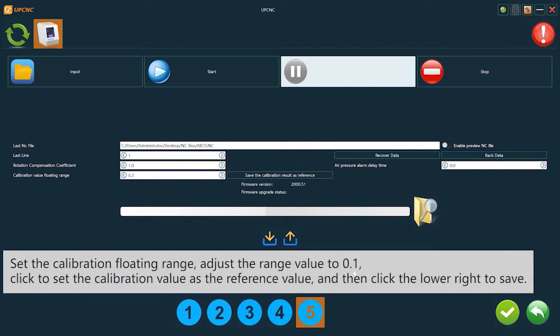Set the calibration floating range. Adjust the range value to 0.1. Click to set the calibration value as the reference value, and then click the lower right button to save.